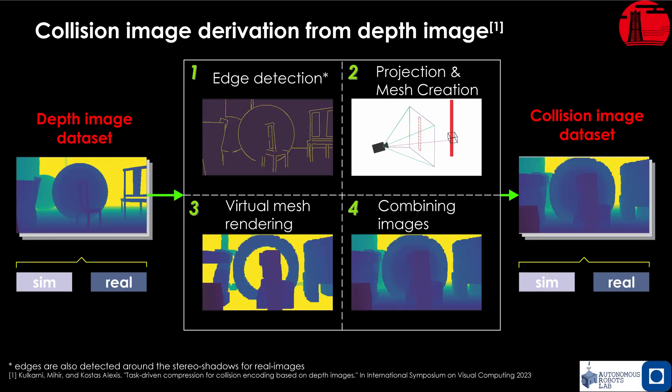To bridge the sim-to-real gap for sensing, we utilize a novel encoding method that captures collision information from the depth images. A collision image is created that inflates the obstacles seen in the depth image by the size of the robot.